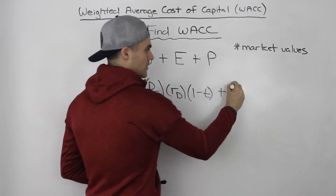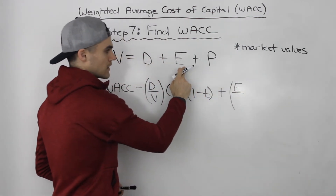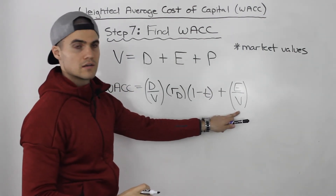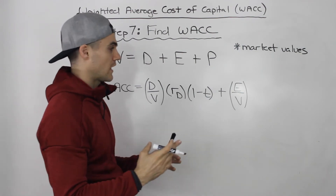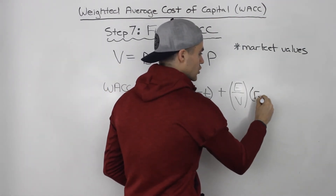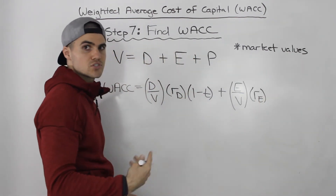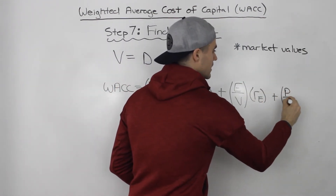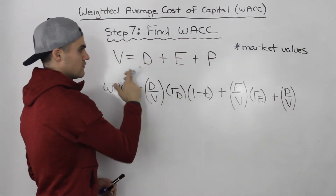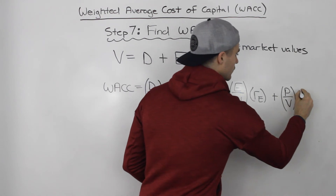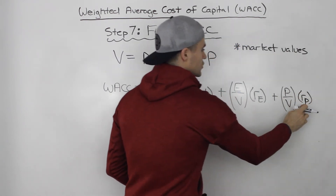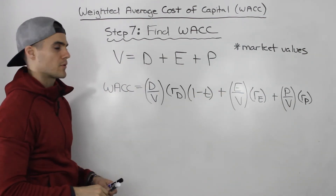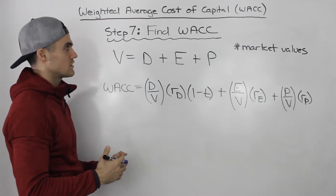Then we take the equity portion: the market value of equity divided by the total value of the company V gives us the weight of equity, and we multiply that by the return on equity found in step two. Similarly, we take the market value of preferred equity divided by V and multiply it by the return on preferred equity found in step three. This whole formula gives us our weighted average cost of capital, taking all the information from steps one to six.